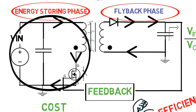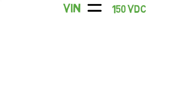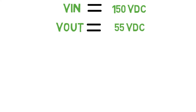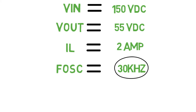Now considering some necessary design parameters, let us take an example for designing a flyback converter. We will give an input voltage Vin of 150V DC, and the expected output voltage Vo is 55V DC. The load current Il should be 2 amperes. The switching frequency fosc will be 30 kilohertz, which is decided by the designer and can vary from kilohertz to megahertz. As we increase the frequency, the size of the converter decreases — we'll see that in the formulae.